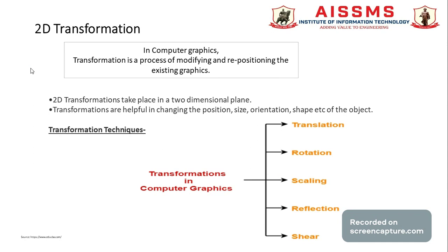Transformations are helpful in changing the position, size, orientation, shape, etc. related to an object. There are different techniques related to transformation: translation, rotation, scaling, reflection, and shear.